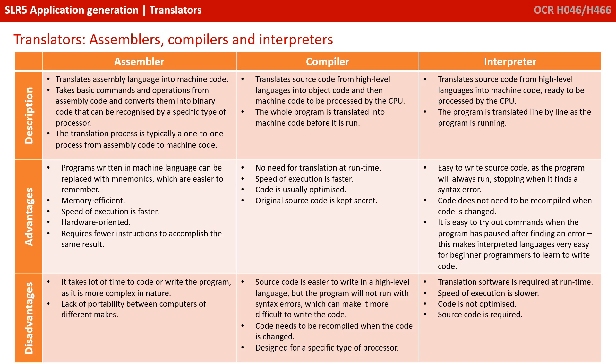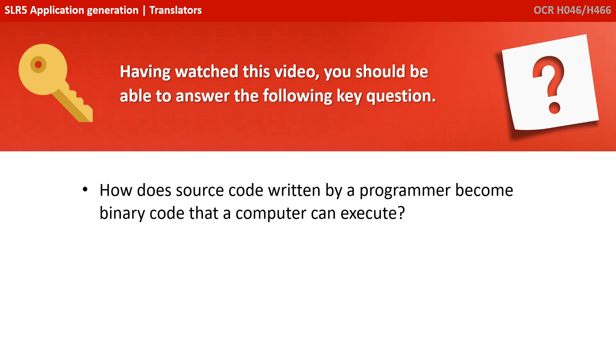What we've got on the screen now is a nice summary. This would be an excellent point to pause the video and take some notes. We've got the three types of translators across the top, with a description and some advantages and disadvantages of each type. Having watched this video, you should be able to answer the following key question: how does source code written by a programmer become binary code that a computer can execute?